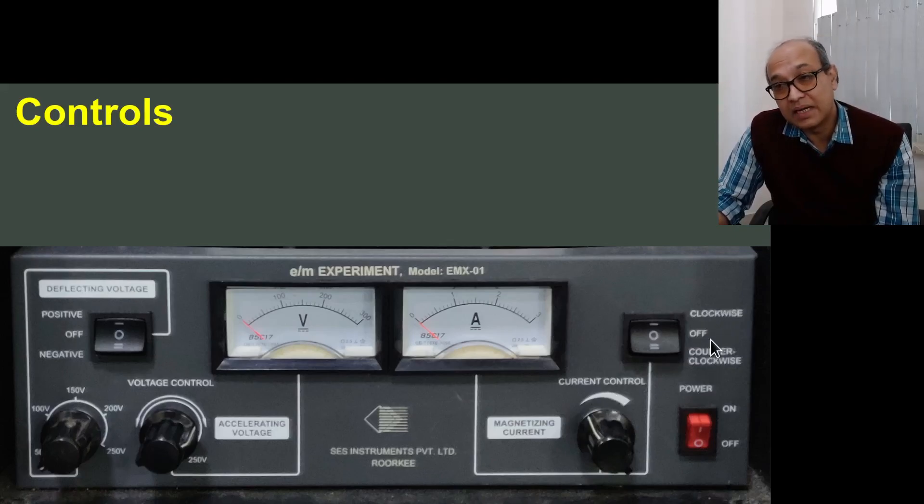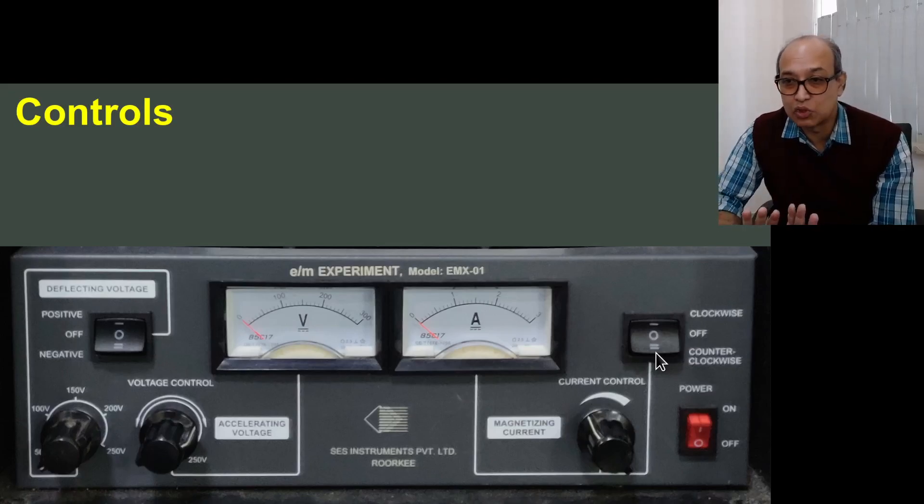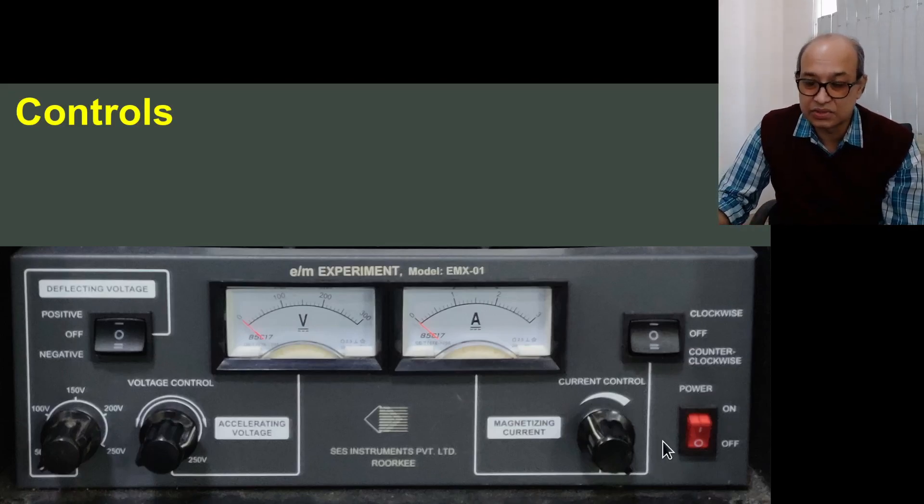Of course the direction of the magnetic field can also be controlled. This clockwise, off, and anticlockwise switch gives you the control of in which direction you would like to pass the current through the Helmholtz coil. And this is of course the main power button.